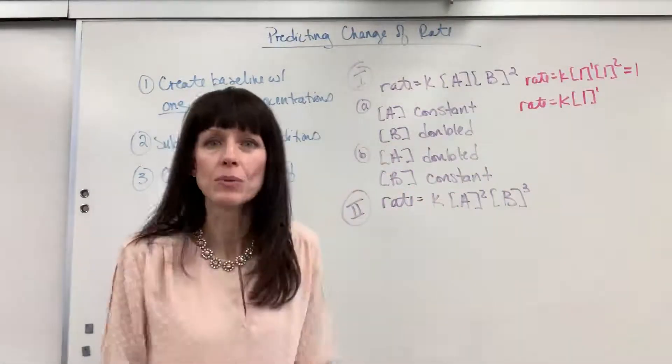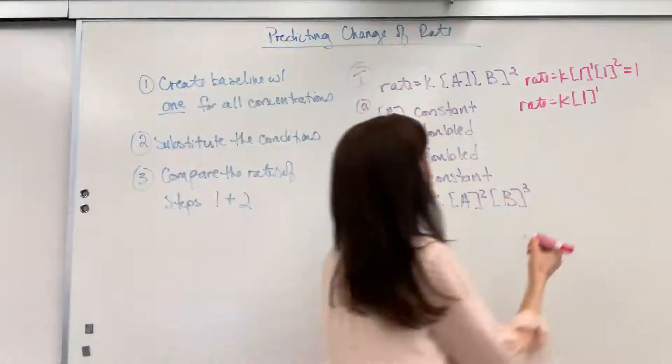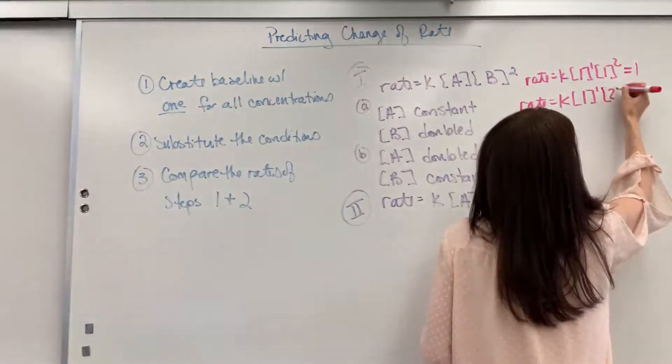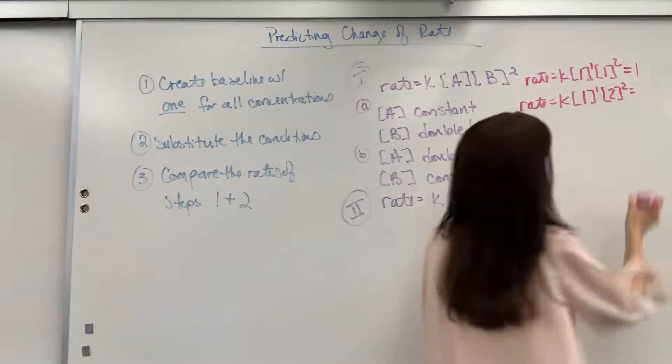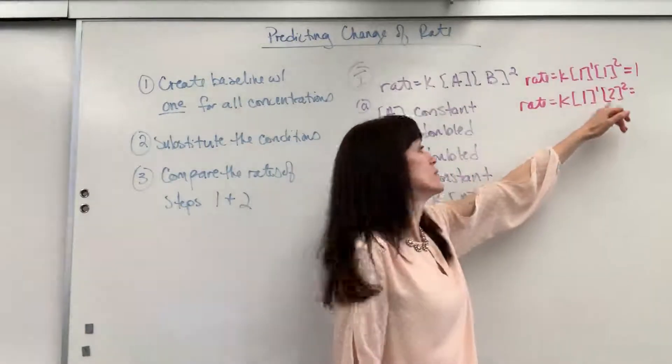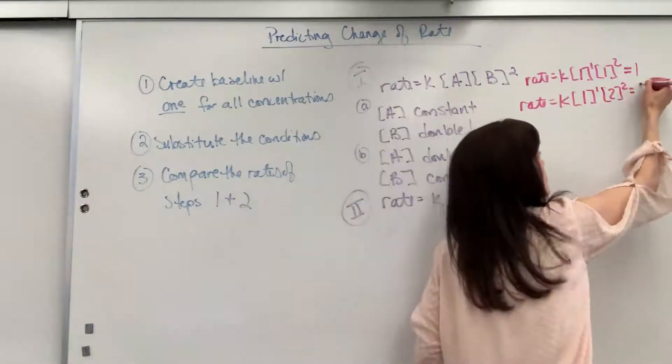Now, B is doubled. Well, what's double 1? It's 2. So this is going to be 2 squared. So 1 to the 1 is 1. 2 squared is 4. 1 times 4 is 4.